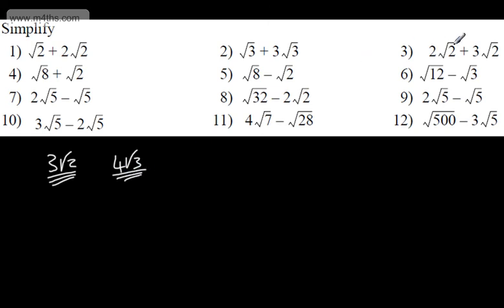Here I've got 2 lots of root 2 plus 3 lots of root 2, so that's going to give me 5 lots of root 2. Remember, the root of 2 is an exact value — we call it exact, not a decimal approximation. It's about 1.41.